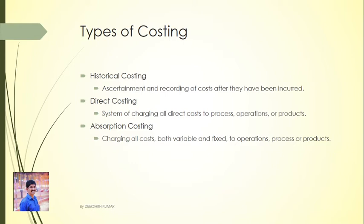The third is Absorption costing. Absorption costing is a practice of charging all costs — both variable as well as fixed — to operations, processes, or products. This costing is also known as full costing. Here, no distinction is made between the fixed and variable cost. Absorption costing is also known as traditional costing or conventional costing.